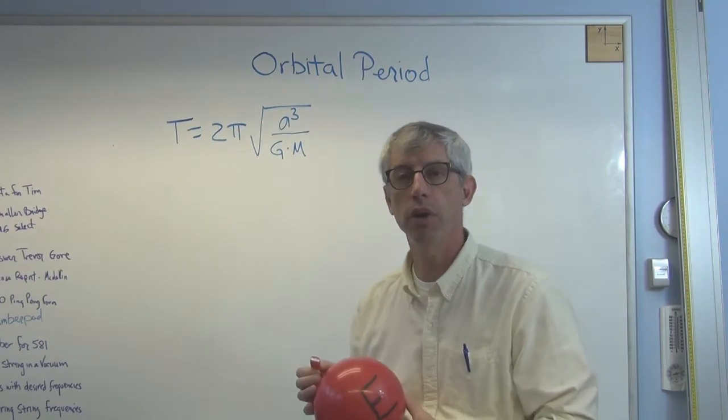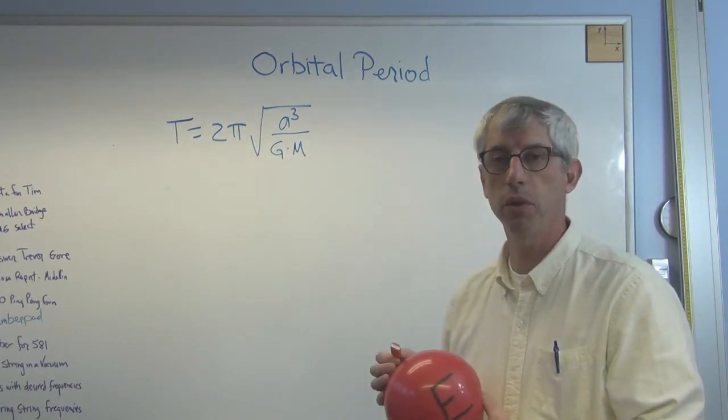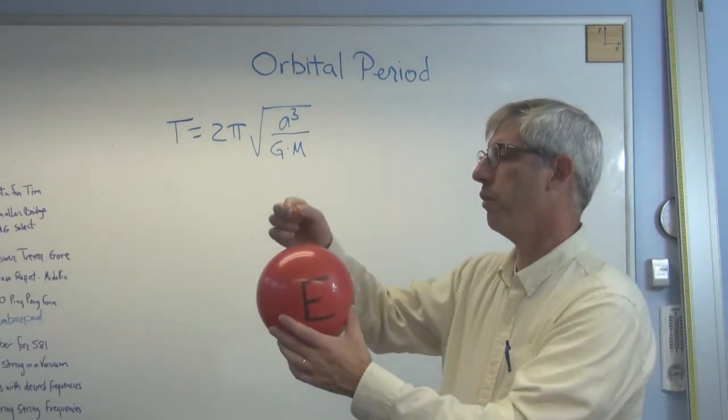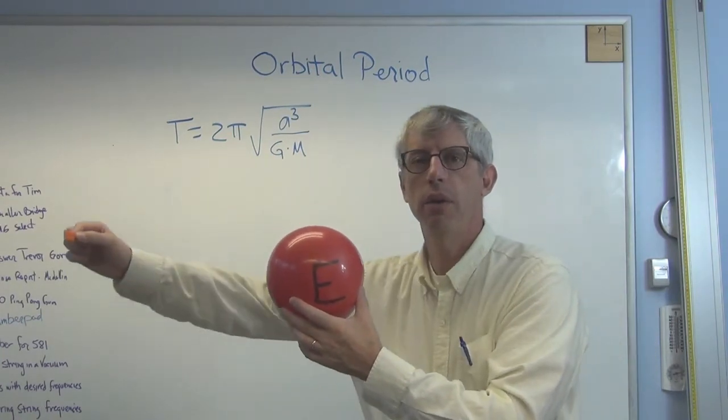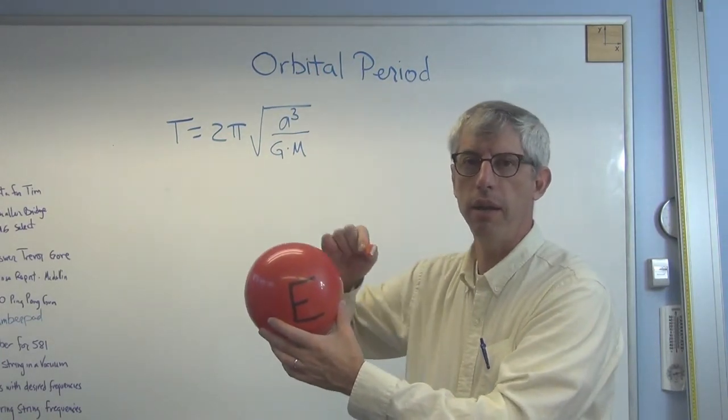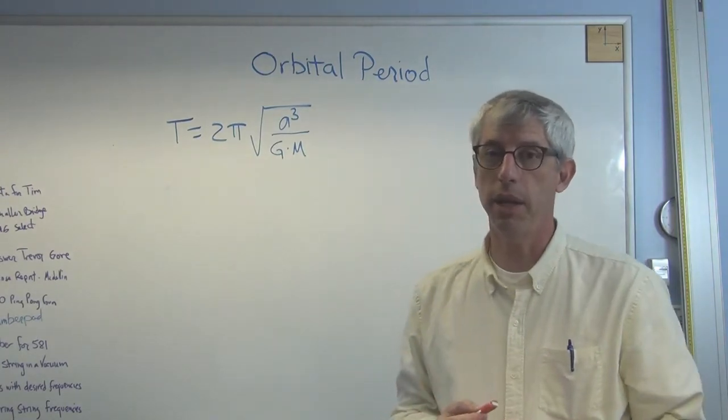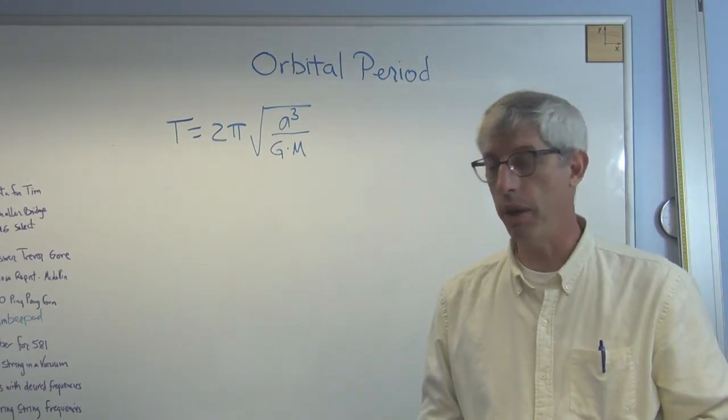And it doesn't matter whether you're in a circular orbit or an elliptical orbit. Let's say it's an elliptical orbit. You come in real close there, go way out and come back in. That's still one orbit, and the time it takes to do that is still the orbital period.